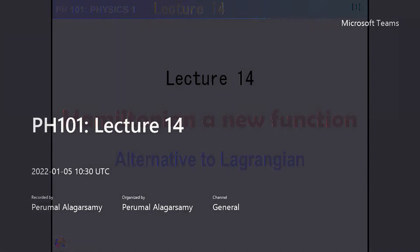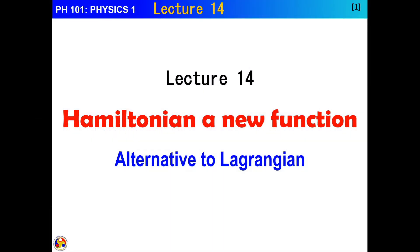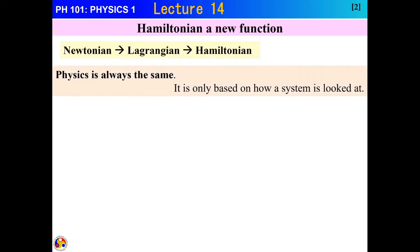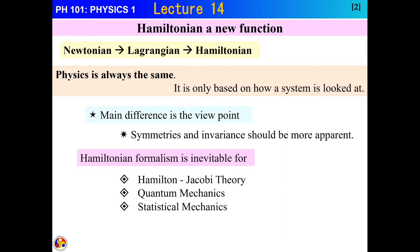Welcome to Lecture 14. We are going to continue learning the Hamiltonian mechanism and Hamilton's equation of motion, which is an alternative to the Lagrangian. So far we have seen Newtonian mechanics, then we went into Lagrangian, and now we are entering into Hamiltonian. Although these are different mechanisms to approach a problem, the physics is the same for a given problem — it is only based on how you look at it.